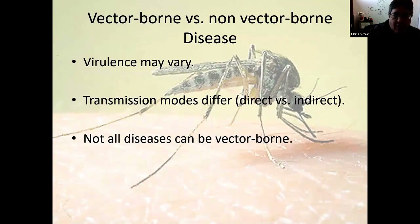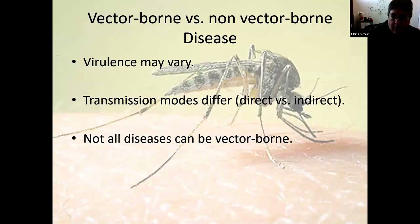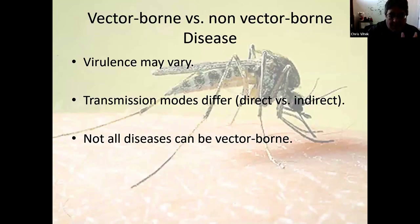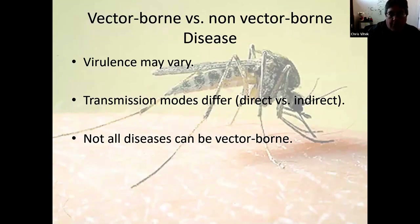With non-vector-borne diseases, you can have direct transmission from one infected host to another, or transmission via fomites or water-borne routes. Fomites are surfaces or inanimate materials — someone coughs on a desk and someone else picks up the pathogen from that surface. That would not be a vector-borne disease because it doesn't have a living intermediary. So COVID-19 is a non-vector-borne disease, but my talk and research focuses on vector-borne diseases.